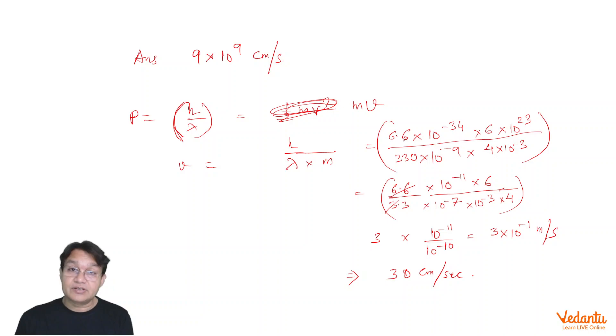h is 6.6 into 10 to the power minus 34 into 6 into 10 to the power 23, which is Avogadro's number, which is given. And 4 into 10 to the power minus 3 is the mass of helium atom and 330 into 10 to the power minus 9 is the lambda, 330 nanometer.